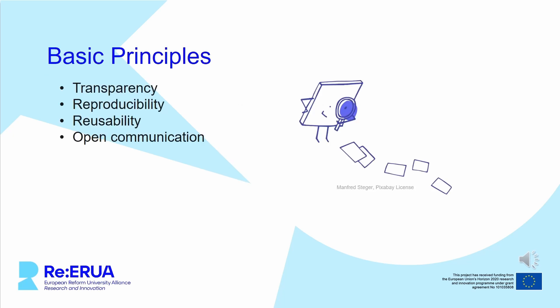Common to most definitions is an agreement on certain basic principles and elements that shape and characterise open science. The four basic principles are transparency, reproducibility, reusability, and open communication. Reproducibility and reusability refer primarily to research data and results: reproducibility means that available data can be used to construct and recalculate study results, while reusability refers to the use of existing data in another context. Transparency and open communication, especially of failures, should run through the entire research cycle. All four principles are directly directed towards the reuse of scientific results and data.